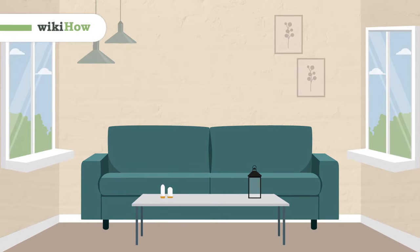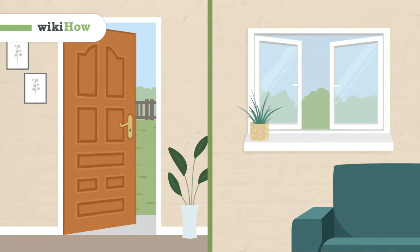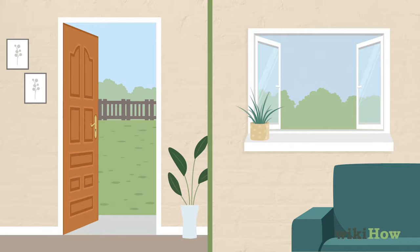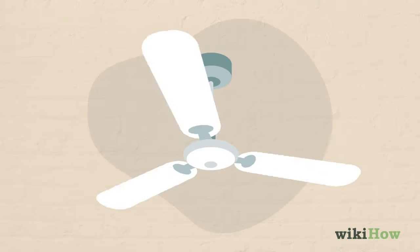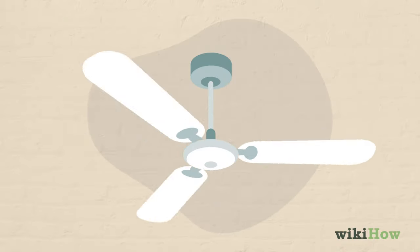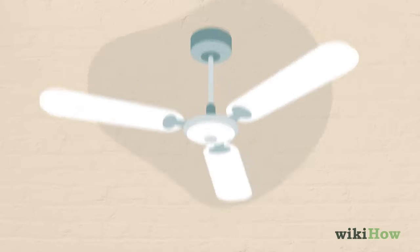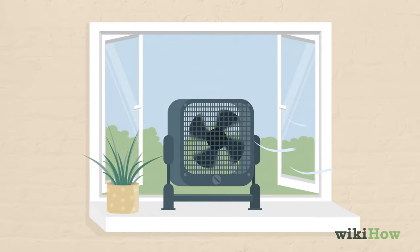To create air flow in a room, open any doors and windows so air can blow in and out. Turn the ceiling fan on if there is one. You can also set up box fans so there's more air flow.